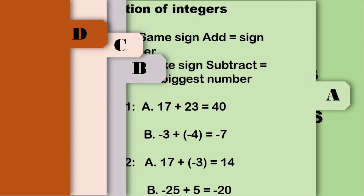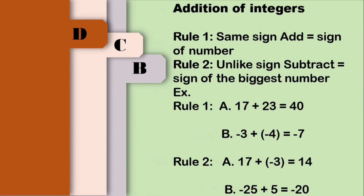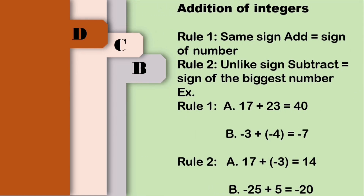So let us start with addition of integers. Remember that in adding two numbers or integers, we need to follow these two rules. Rule number one: same sign, add — that is equal to the sign of the two numbers. For rule number two: unlike sign, subtract — that is equal to the sign of the biggest number.